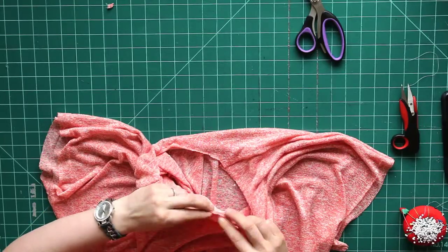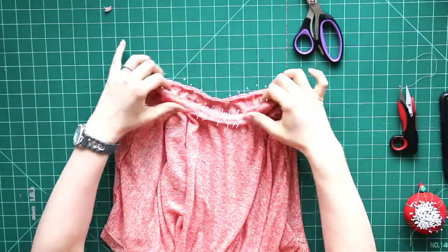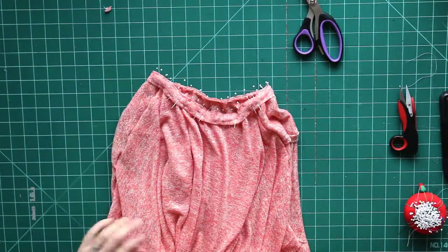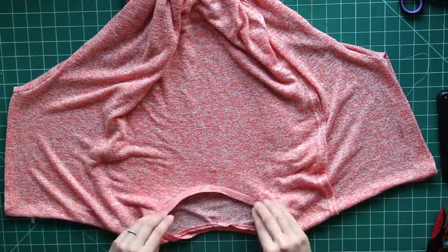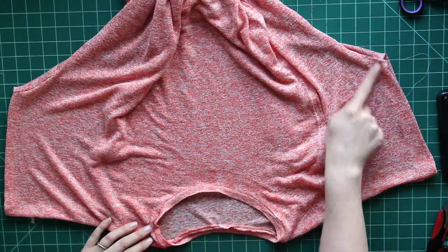Once I've got this all pinned on I'm going to use a straight stretch stitch again to attach it and then press it down. Then I'm going to go back around with my double needle and I'm going to hem that and I'm going to hem the sleeve.